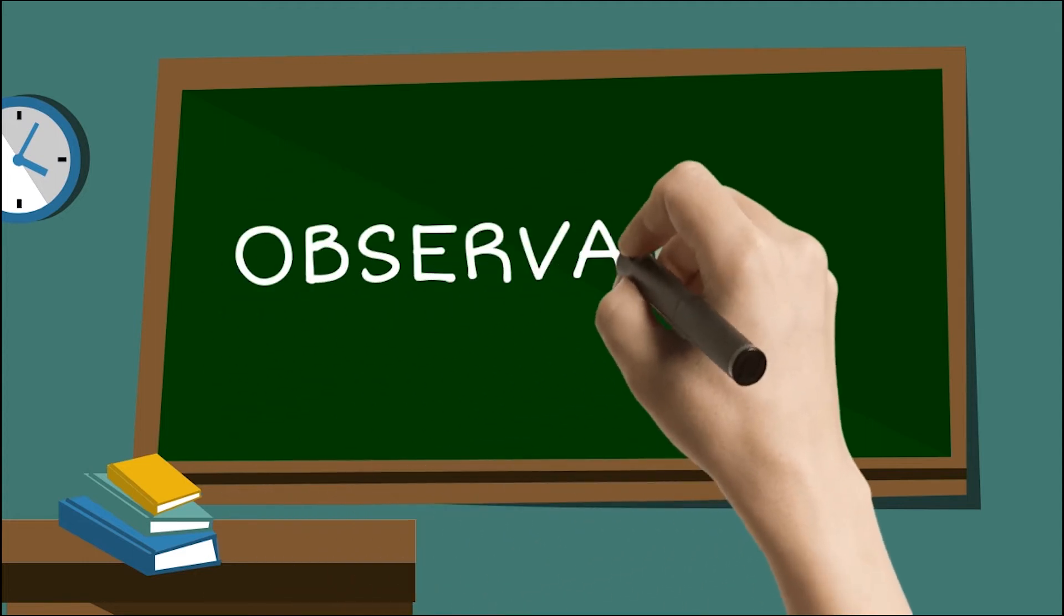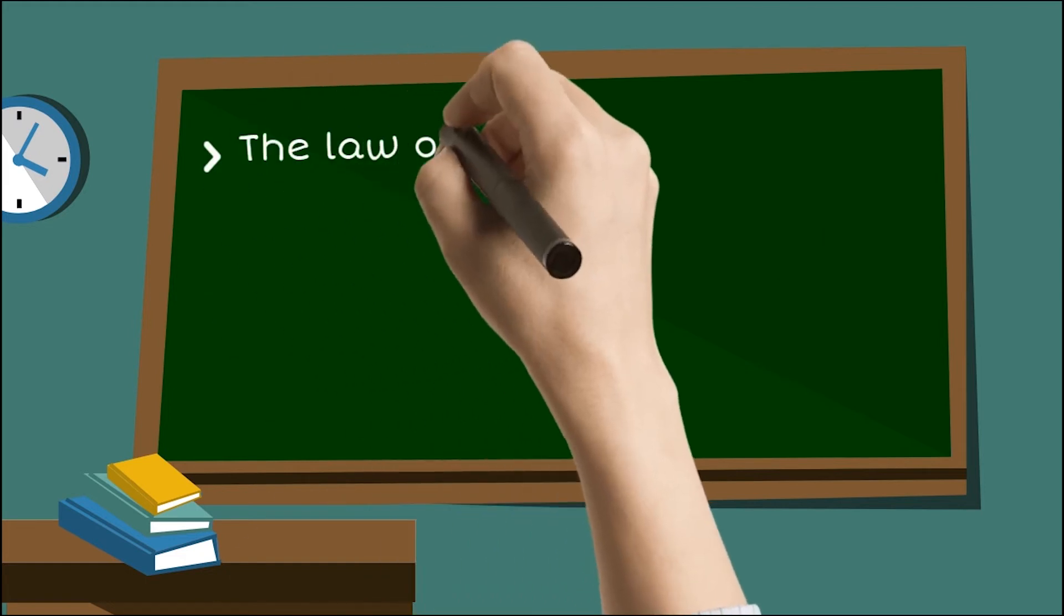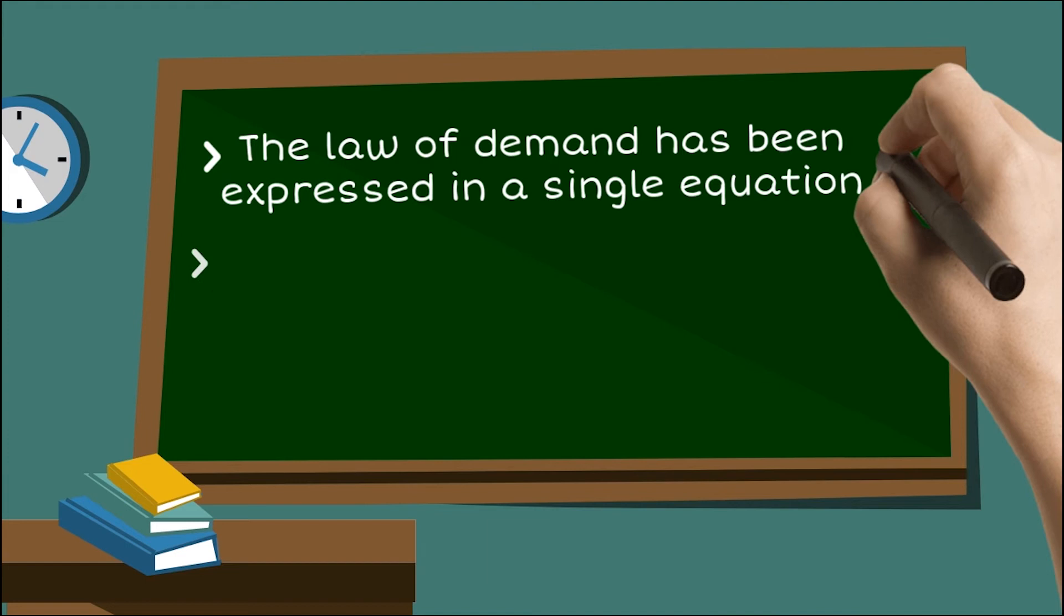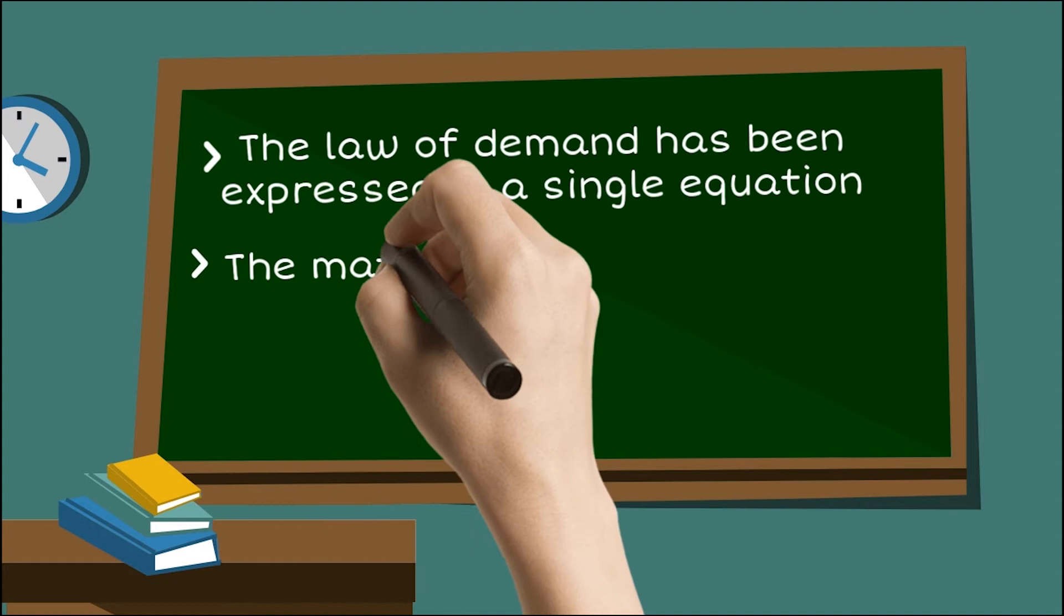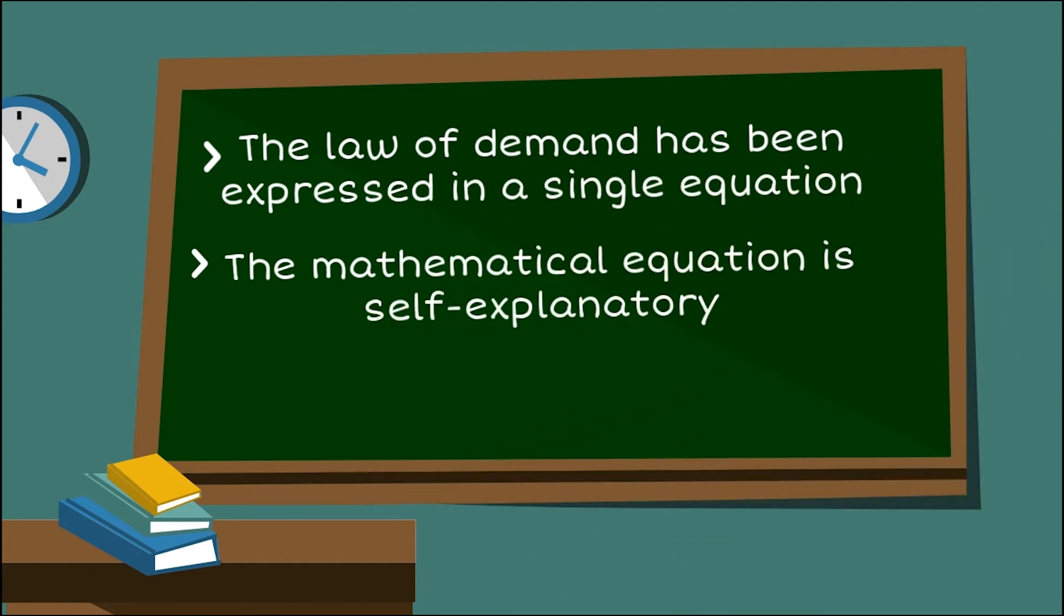Based on elementary knowledge of mathematics, the observations from this equation may be: first, the law of demand has been expressed as a single equation instead of a statement, which has saved time and energy in explaining the law. Second, the mathematical equation is self-explanatory; that is, the equation itself displays an inverse relationship between quantity demanded and price.